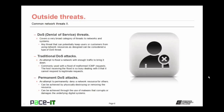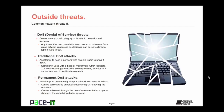The first major threat is the denial of service, or DOS, threat. This covers a very broad category of threats to networks and systems — any threat that can potentially keep users or customers from using network resources as designed. A traditional DOS attack attempts to flood a network with enough traffic to bring it down. It's commonly used with a flood of malformed ICMP requests, causing the host to be so busy dealing with the deluge that it cannot respond to legitimate requests.